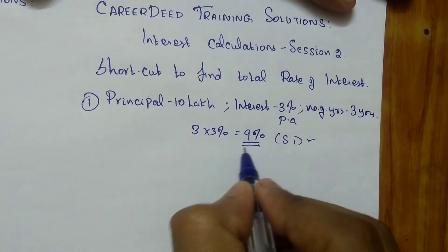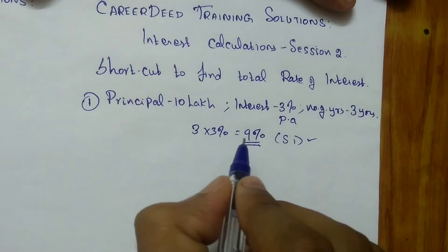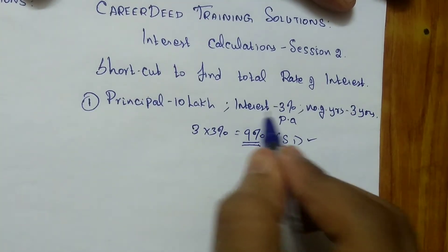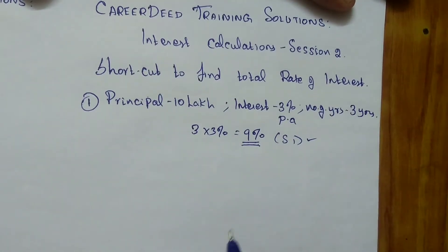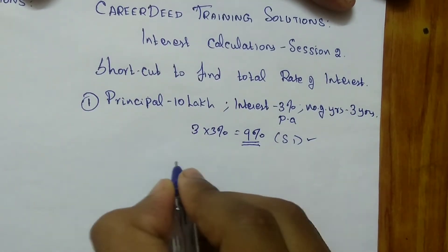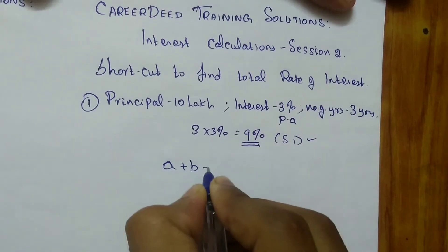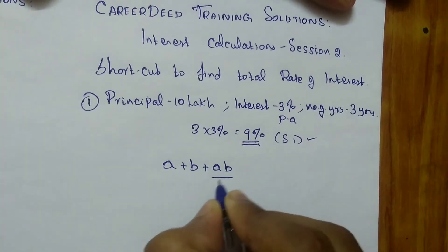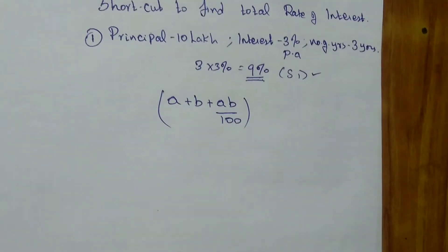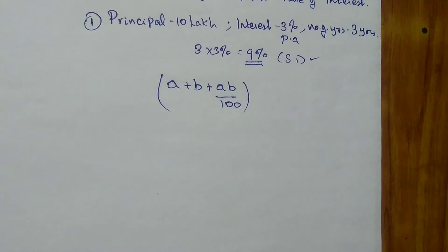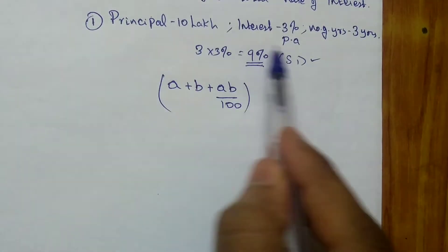So in simple interest, it is 9%. Let us check how it works in compound interest. You can't directly multiply the rate of interest with the number of years. There you have to follow a trick. So here the trick is, you can mark like a formula. So it is a plus b plus ab by 100.